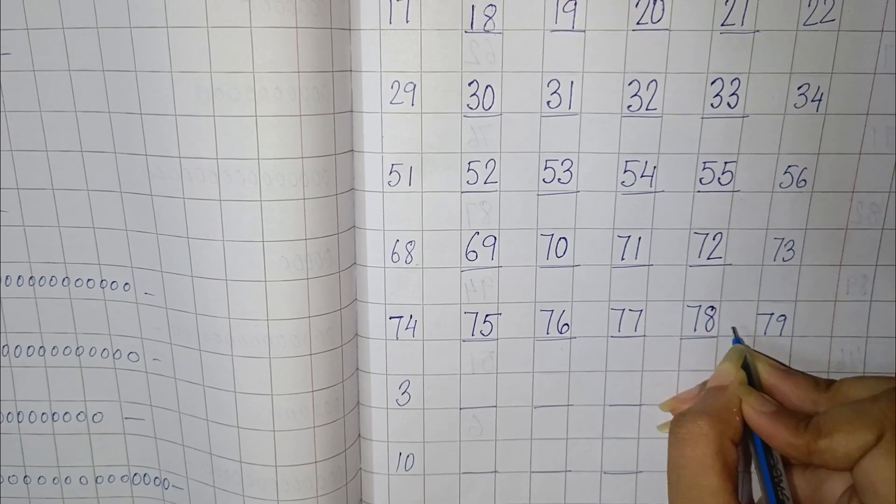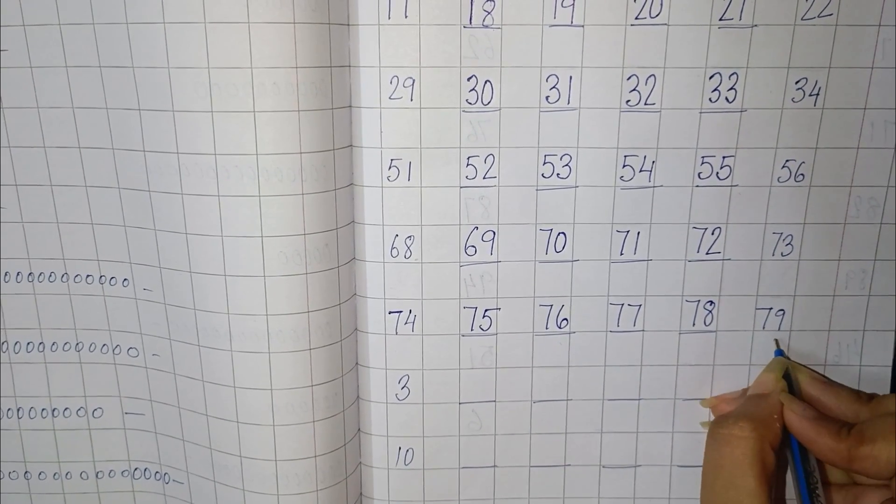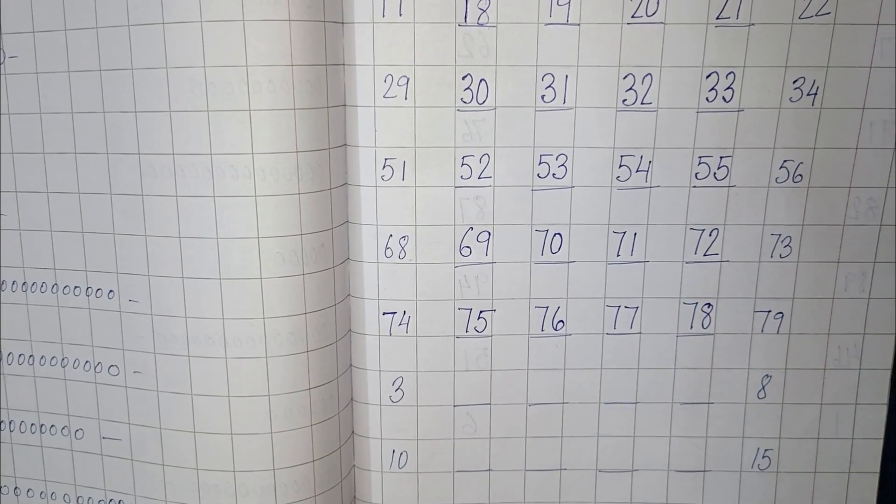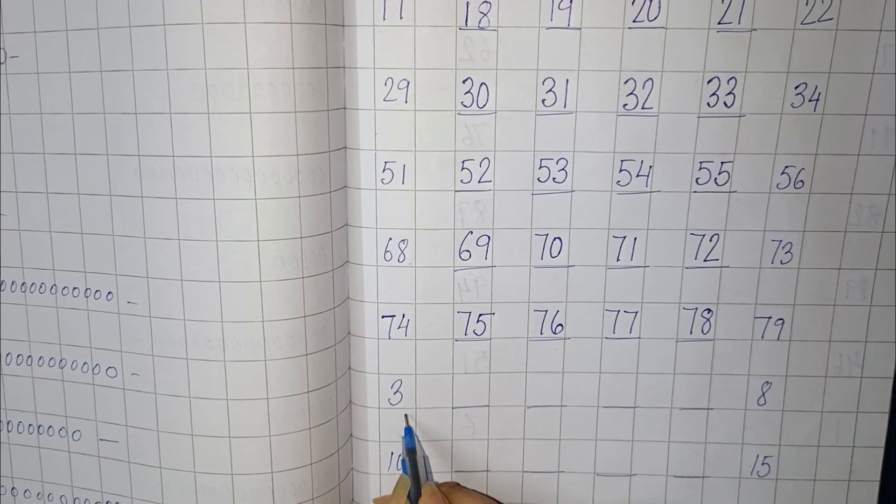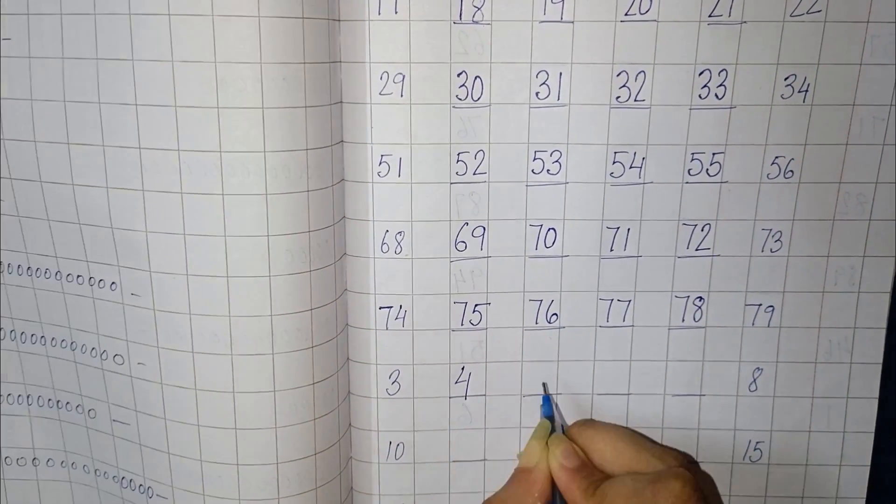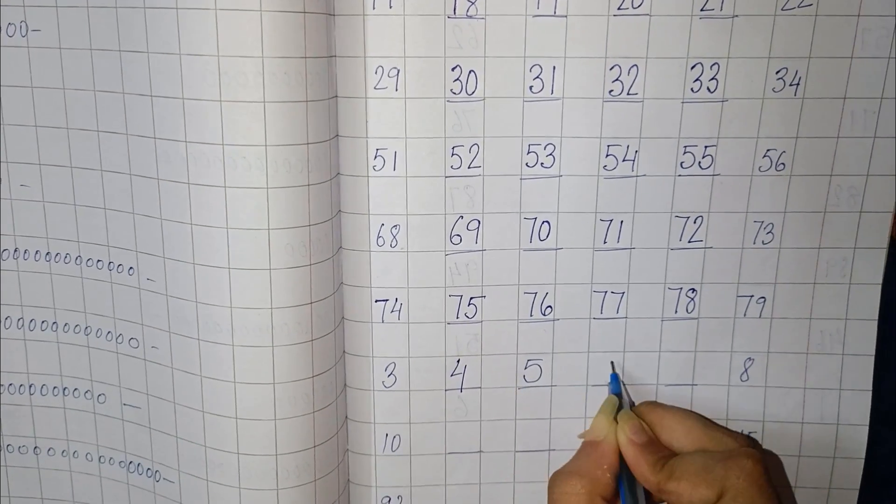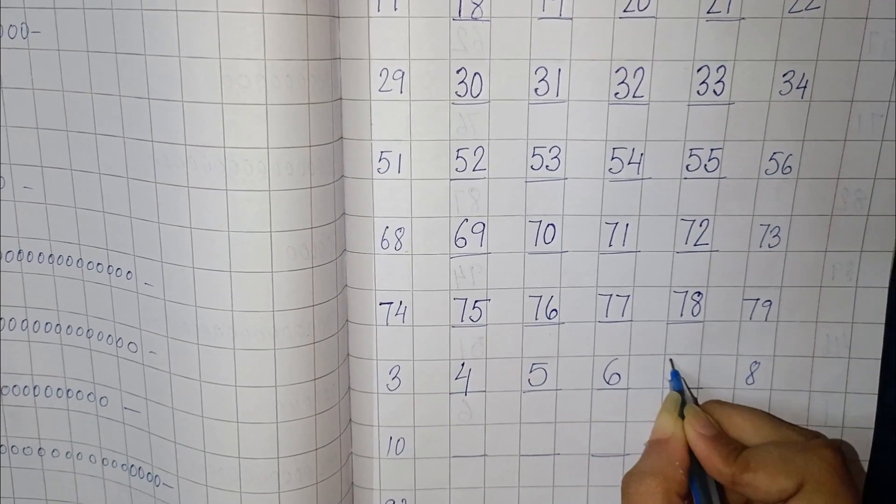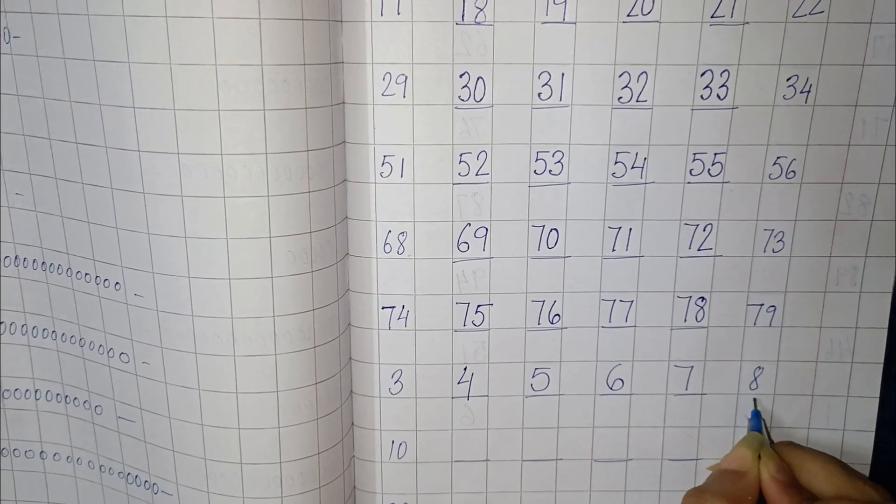Now next we have to find numbers between 3 and 8. So 3, 4, 5, 6, 7, 8.